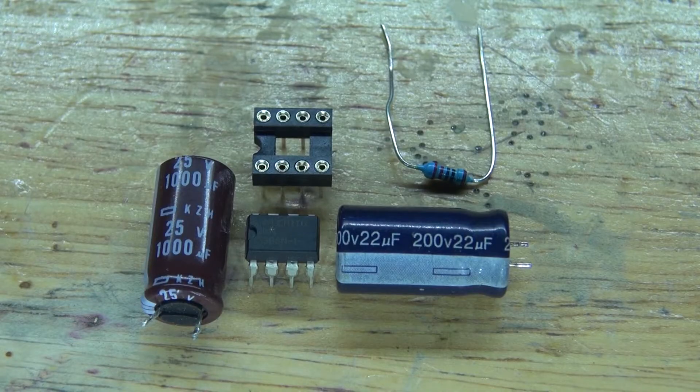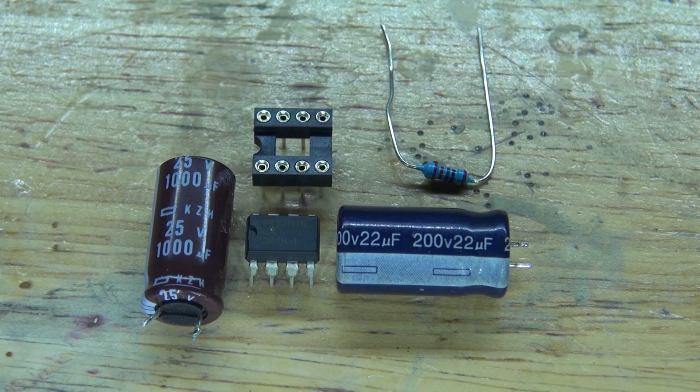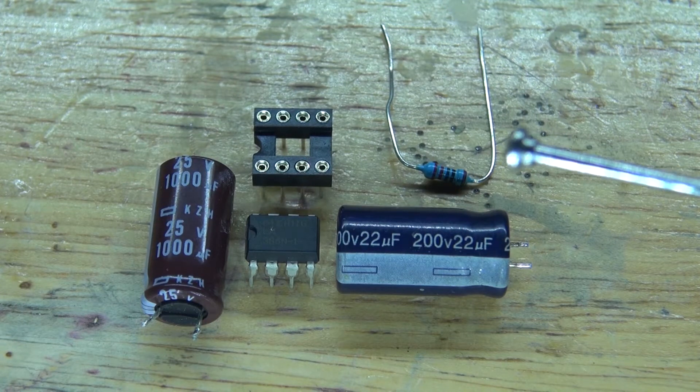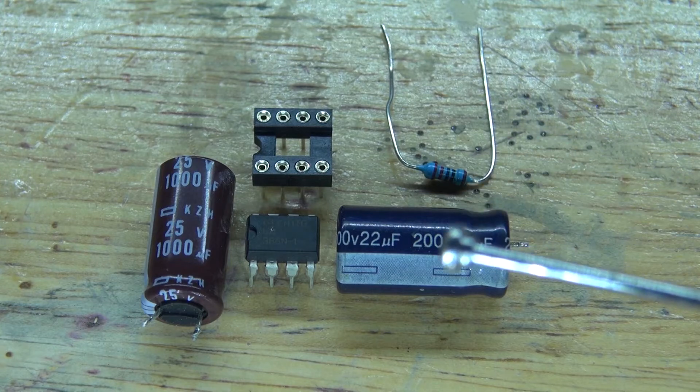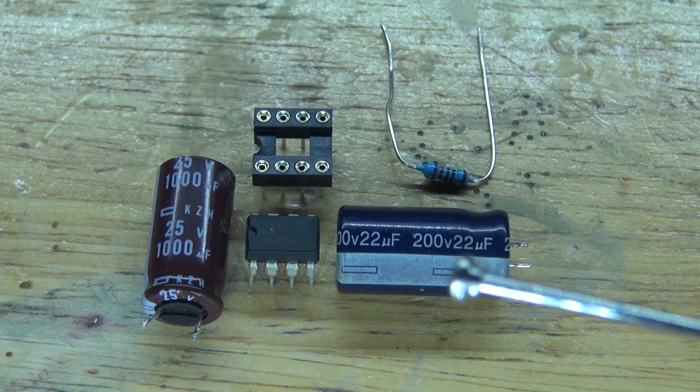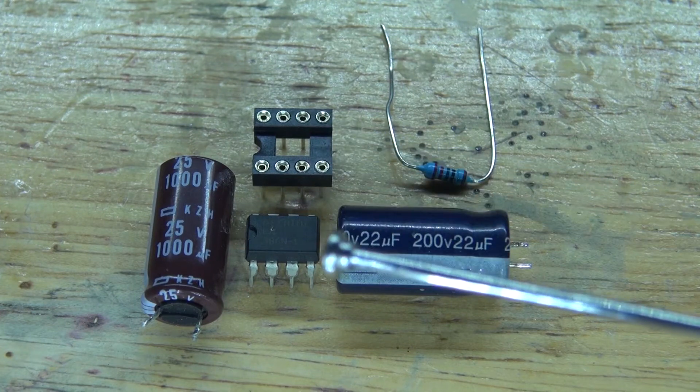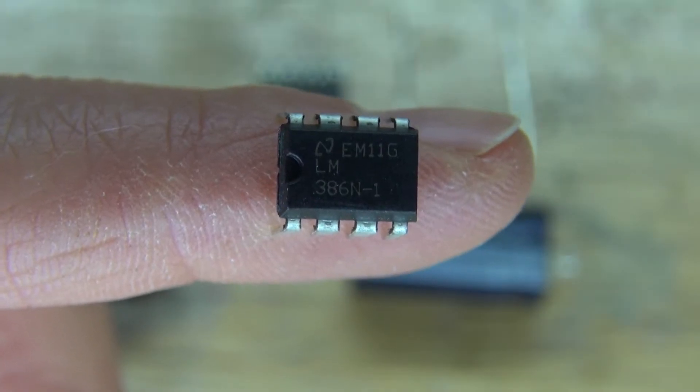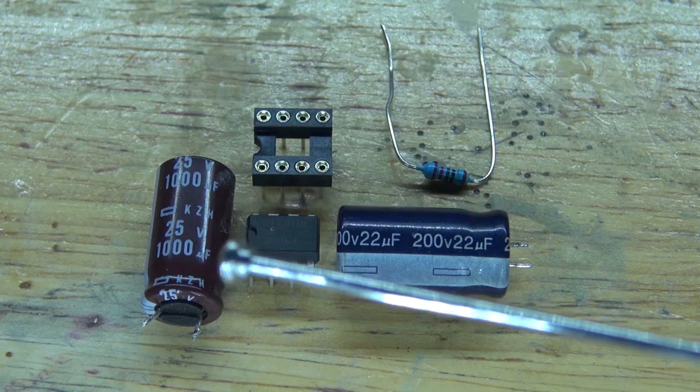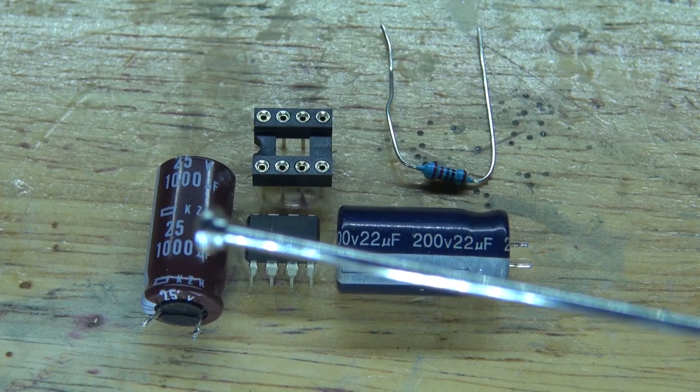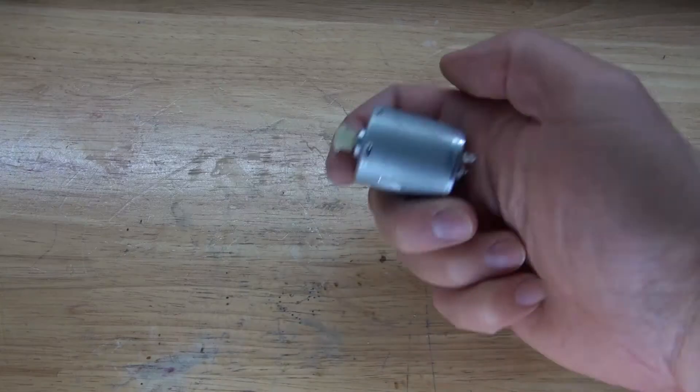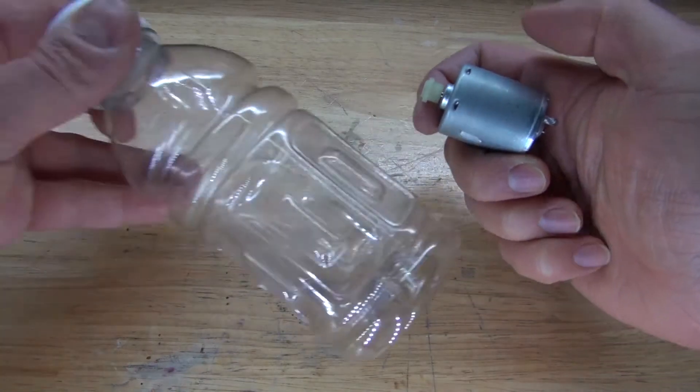And these are the items you're going to need to make for this project. The items you're going to need is a 220 ohm resistor, a 22 microfarad electrolytic capacitor, an 8 pin IC socket holder, an LM386 audio amplifier, and a 1000 microfarad electrolytic capacitor, a DC motor, and a plastic bottle.